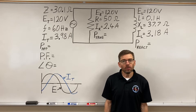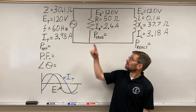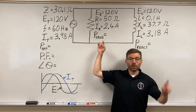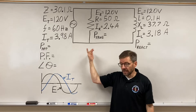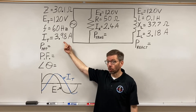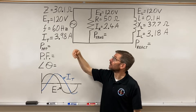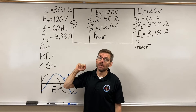In the last video, we figured out the currents — resistive current, inductive current — combined them together using Pythagoras and got the total current, then figured out the impedance.